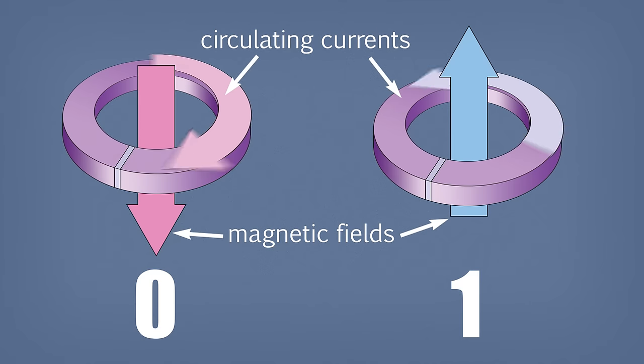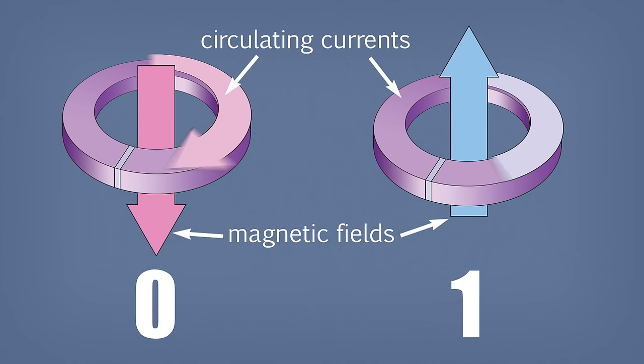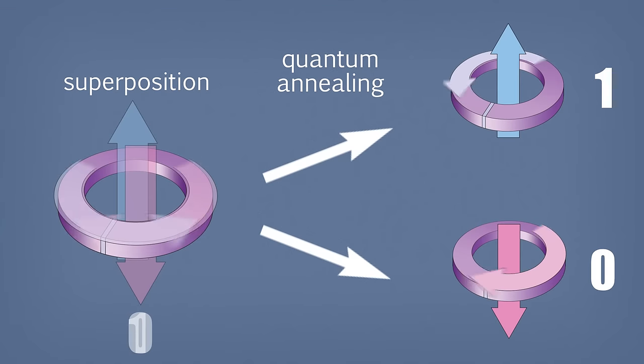Because a qubit is a quantum object it can be in a superposition of the zero state and the one state at the same time. In the quantum annealing process, each qubit goes from the superposition state into either the zero state or the one state, which are classical states at the end of the anneal. The physics of this process can be shown in an energy diagram.